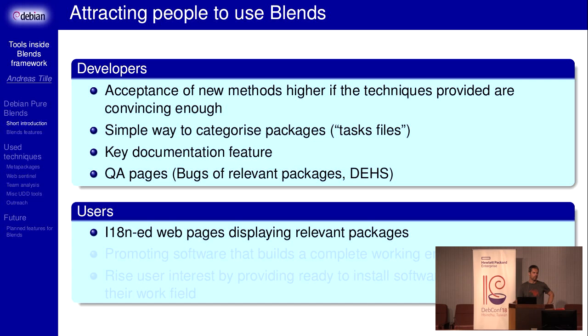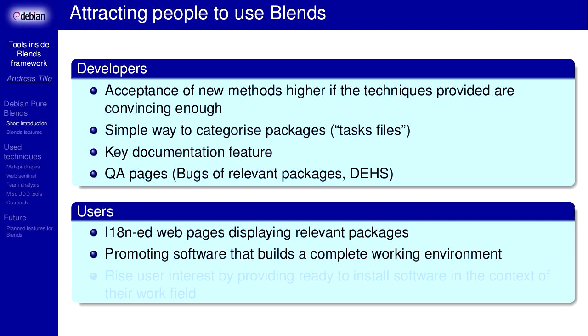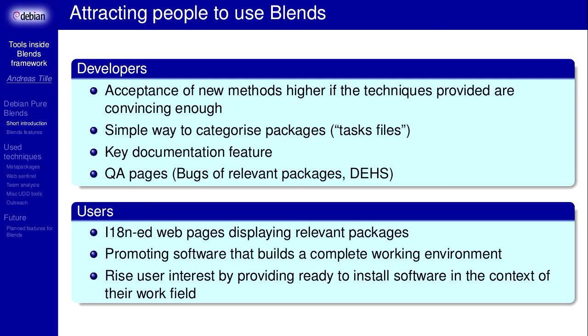We have quality assurance pages where we list bugs, and we also have pages where we can watch the external health status — checking if new upstream versions are available. From the user point of view, the web pages provide very simple means to do translations: just click a button. These web pages, created out of the task files, are very helpful to promote the software and give the user means to create a complete working environment, raising user interest by providing ready-to-install software in their specific work field.